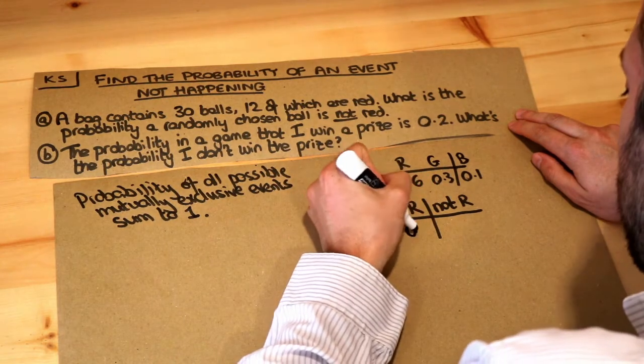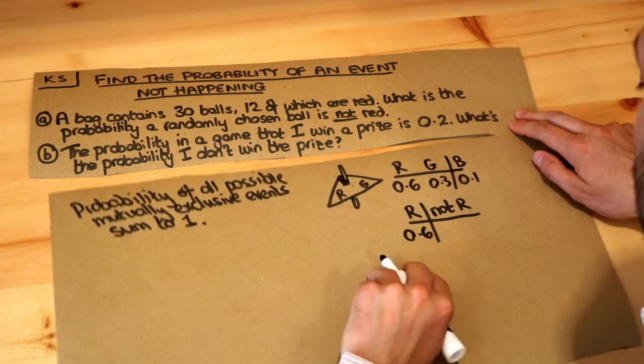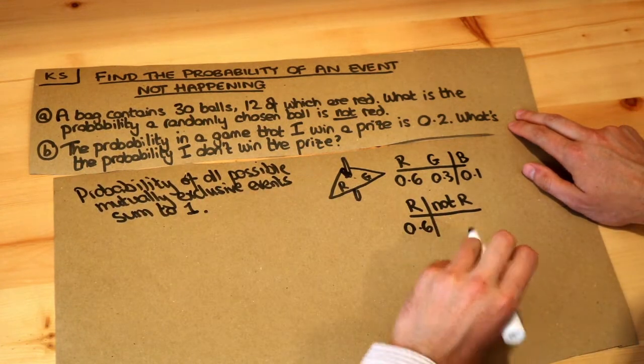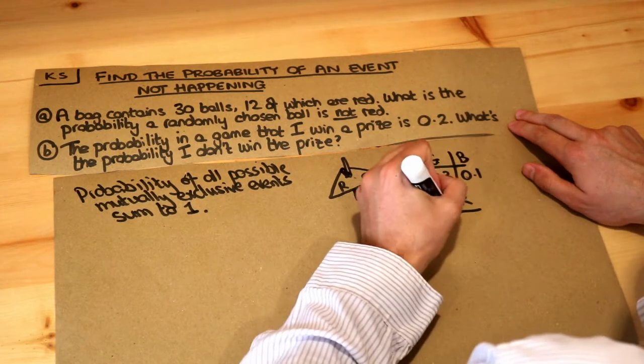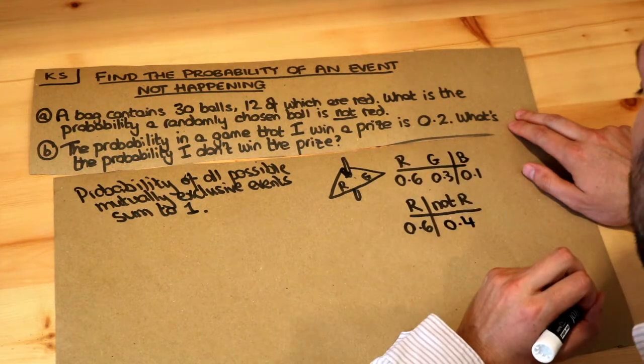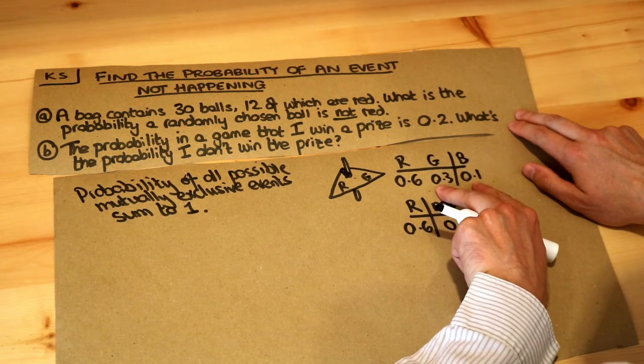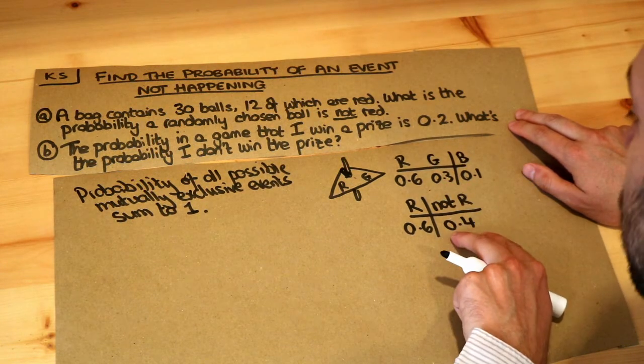So if the probability of red was 0.6, then what's the probability of it's not red? Well, these two have to add up to one, and so we could just do 1 minus the 0.6 to get 0.4. And you can see that's right because if it's not red, it's either green or blue, and 0.3 plus 0.1 is 0.4.